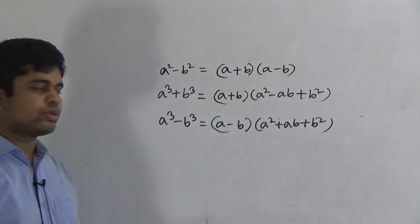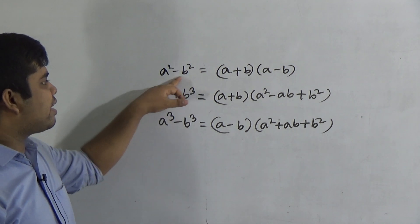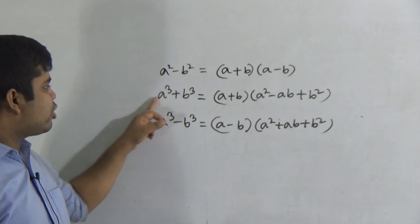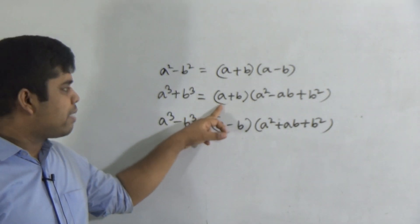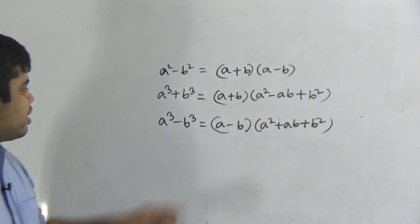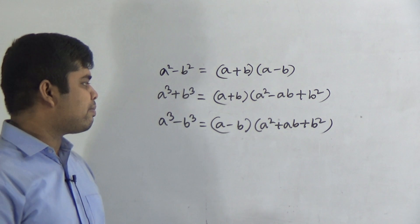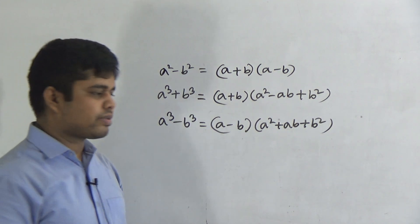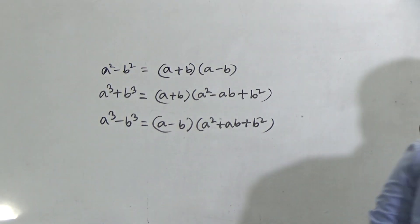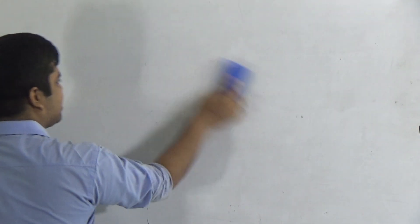I hope you have understood. Please memorize these: a² − b² = (a + b)(a − b); a³ + b³ = (a + b)(a² − ab + b²); a³ − b³ = (a − b)(a² + ab + b²). Now we shall start to resolve these expressions into factors.